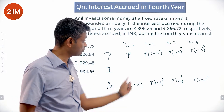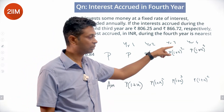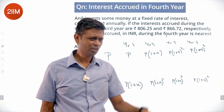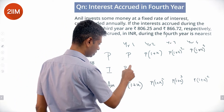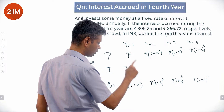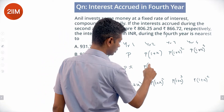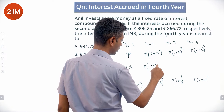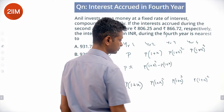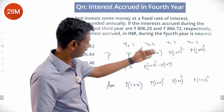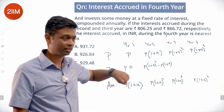This amount becomes the principal for year 2, and that becomes the principal for year 3. So the interest in year 1 is P·x. The interest in year 2 is P(1+x)² minus P(1+x) — that is, amount minus principal gives the interest accrued in the second year.